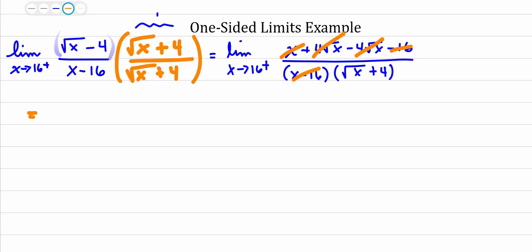So from here now, if I rewrite this as the limit as x approaches 16 from the right, all I have left is 1 up top because everything reduced, canceled out. On the bottom, I just have this piece of the square root of x plus 4.